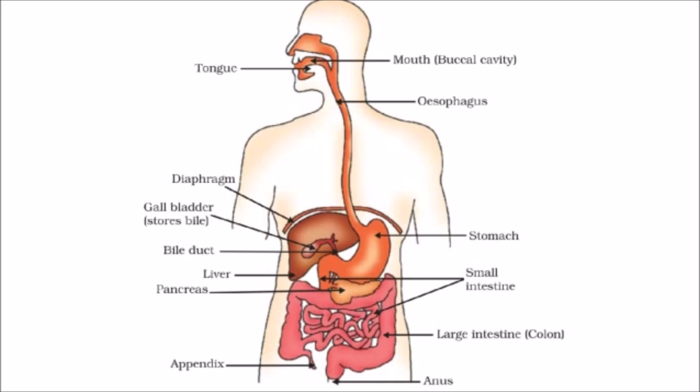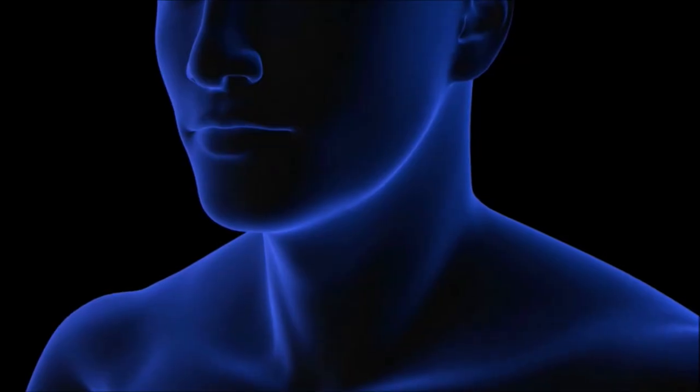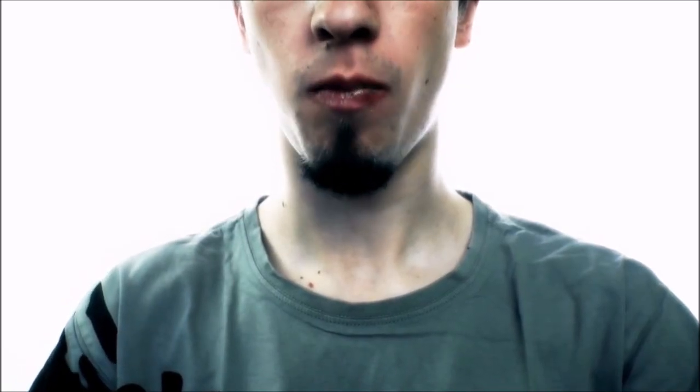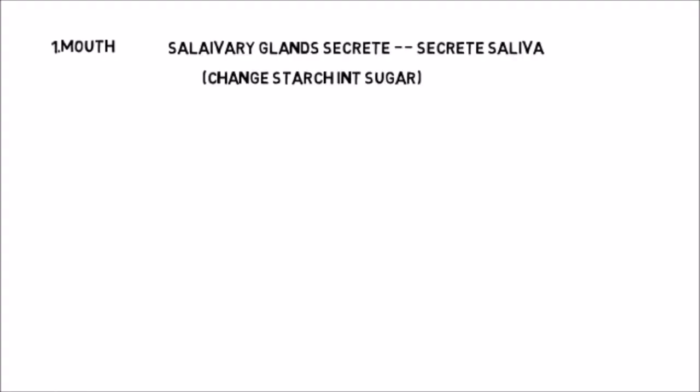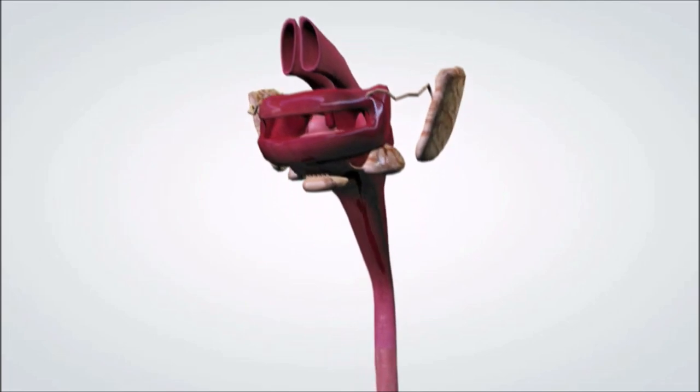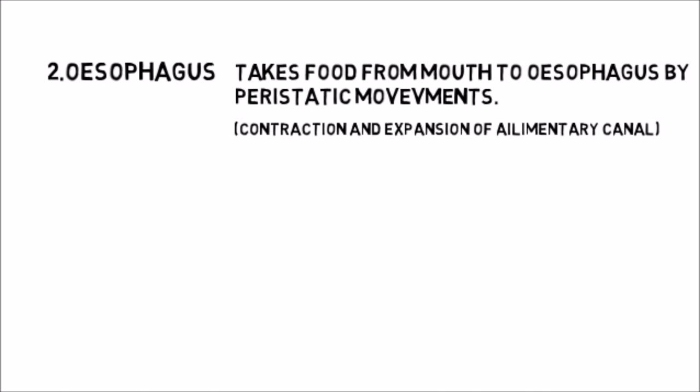We will discuss each and every part of the alimentary canal. First, the mouth, which is the first part of the alimentary canal, and then the teeth and tongue. Teeth are hard structures present in the upper and lower jaws. They are used for grinding, cutting, and chewing the food. The tongue is a muscular sensory organ. It mixes the food with saliva and is also helpful in producing speech. After mixing food with saliva, food travels to the esophagus via the pharynx. The esophagus is a thin, long muscular tube which takes the food to the stomach via the process of peristaltic movement.